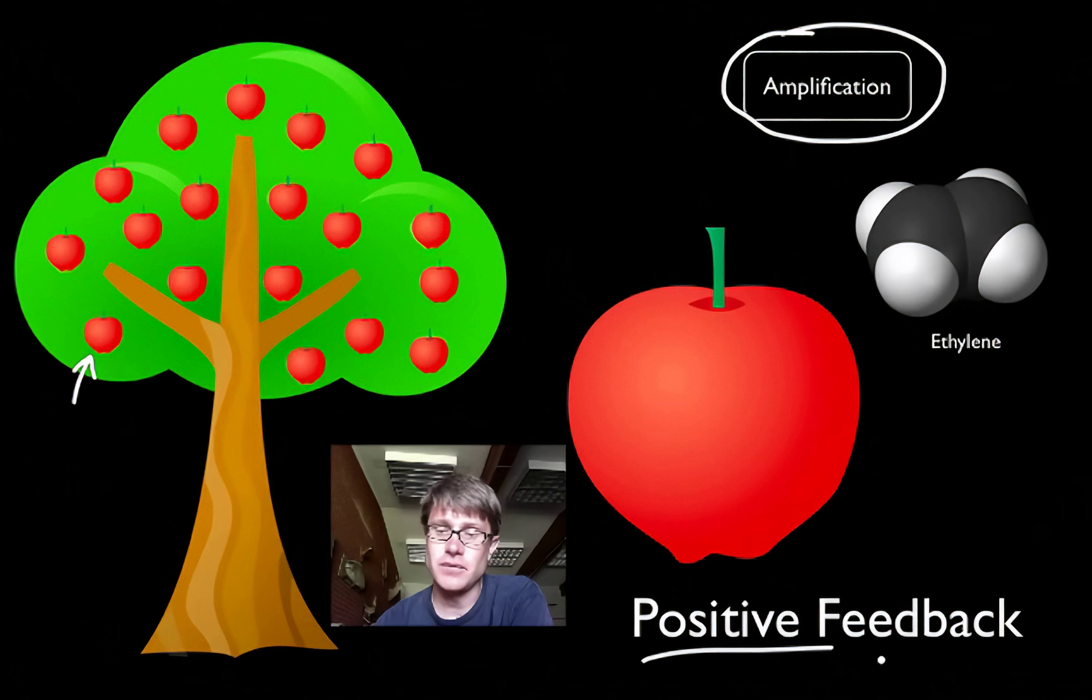Another famous example of positive feedback loop would be in childbirth. The pressure of the head on the cervix of the mother actually causes contractions, which pushes more pressure on the cervix, which causes more contractions. And so eventually the baby is born. Usually we see positive feedbacks when we want something to happen really, really quickly. It's not something that we maintain for a long period of time.